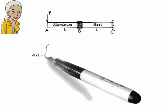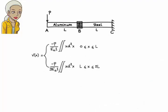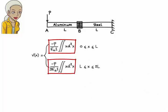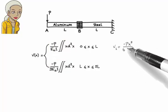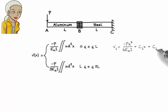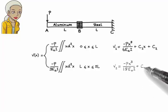Here is what we have so far: this is V1 and this is V2. Now integrate each function twice to get the deflection equations. V1 becomes negative Px cubed over 6·E sub A·I plus C1·x plus C2. And V2 becomes negative Px cubed over 18·E sub A·I plus C3·x plus C4.